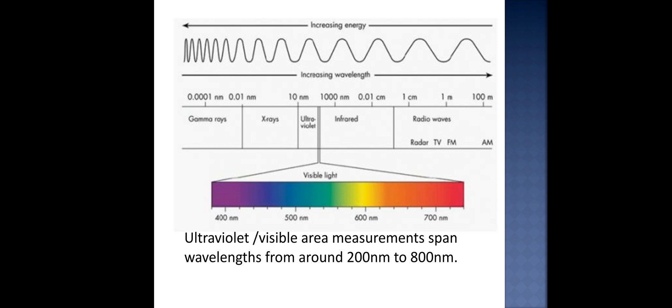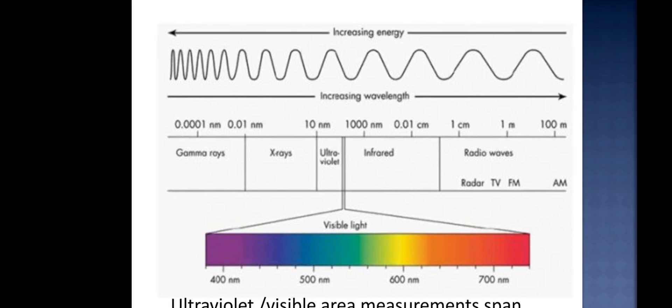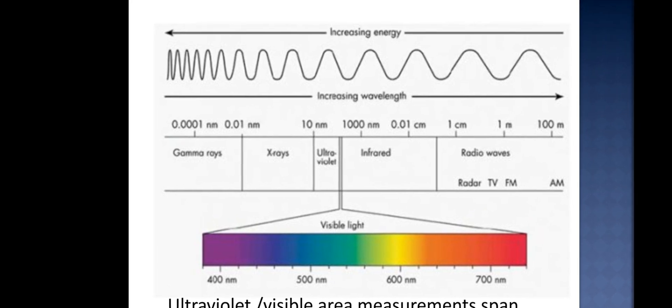In this diagram you will see the ultraviolet and visible area which measures from 200 nanometers to 800 nanometers. First of all, gamma rays range from 0.0001 to 0.01 nanometers, and the next x-ray starts from 0.01 nanometers to 10 nanometers as shown in the diagram. Then the ultraviolet and visible region starts. Going from right to left, the energy increases, and going from left to right, the wavelength increases.